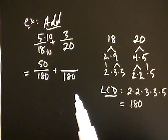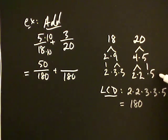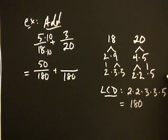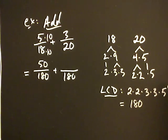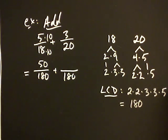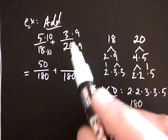Let's do the same thing for the next fraction. The twenty is trying to become one eighty. Here's twenty in factored form: two times two times five. Comparing that with one eighty — two times two times three times three times five — what's missing is two threes, the nine. So if I multiply twenty by three times three, I'll get the LCD. That means twenty times nine gives one eighty, so I multiply the numerator: three times nine is twenty-seven.